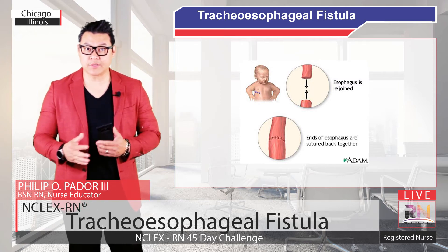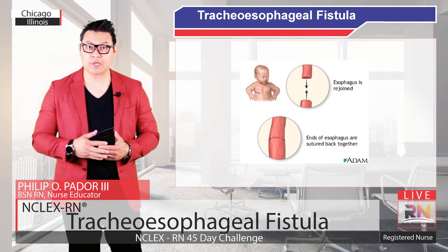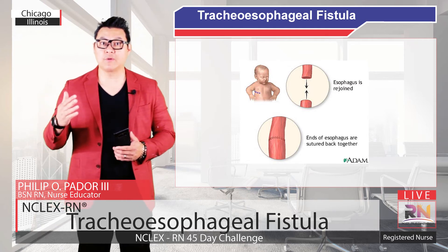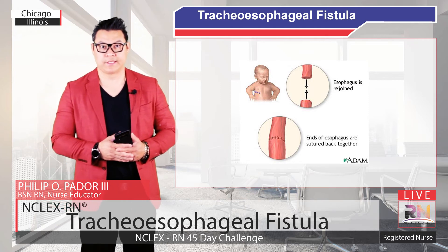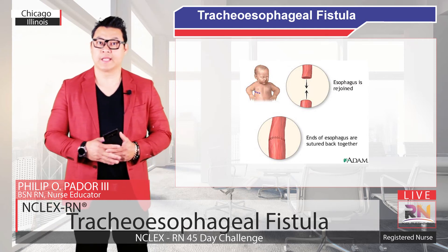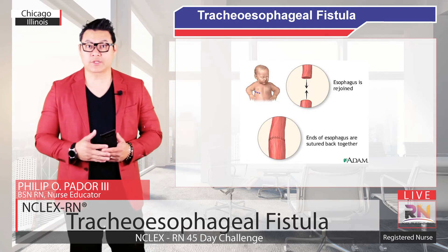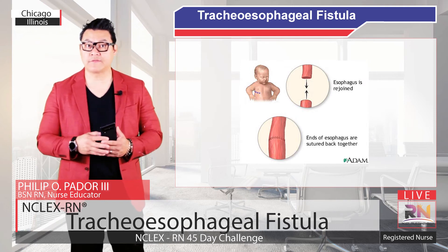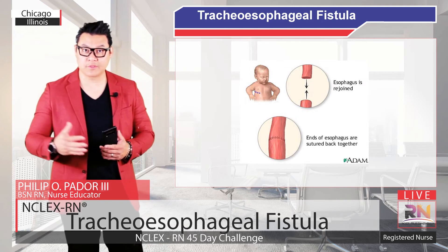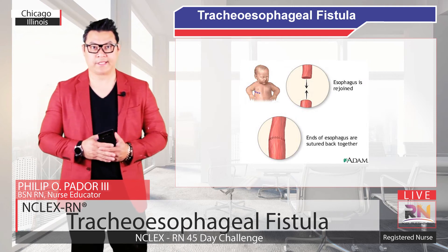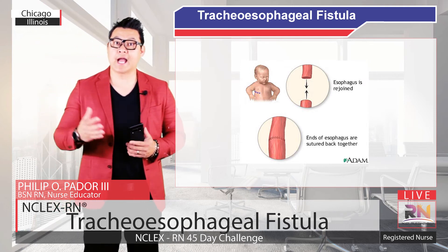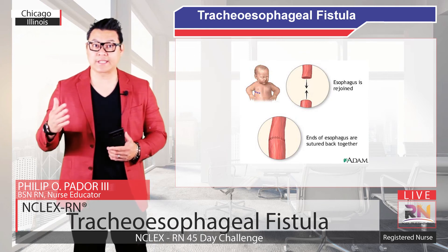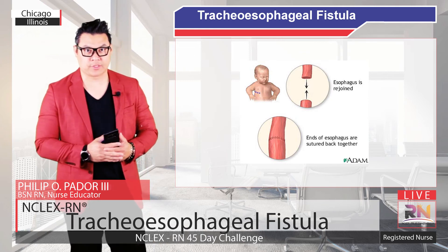The fistula's connection to the esophagus will also be cut and the fistula will be removed. Next, the surgeon will make an incision at the end of the upper esophagus to open it. Then the upper and lower esophagus will be connected with sutures.